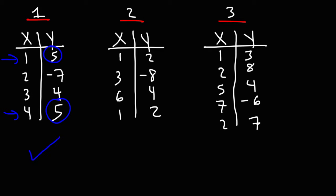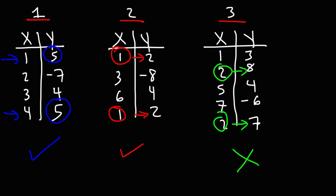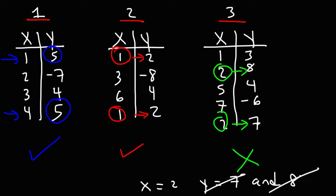For the second table, we do have a common x value, but they lead to the same y value, which is okay. For the third table, we have a common x value but they lead to two different y values — that is not okay. When x is 2, y can't be 7 and 8 at the same time. It needs to give us just one output, not two different outputs. If it gives you two outputs, it is not a function — it's a relation, but it's not a function.